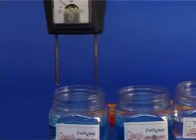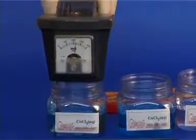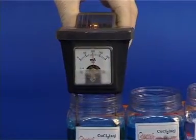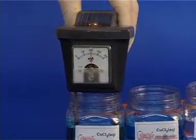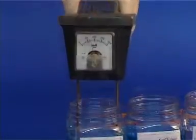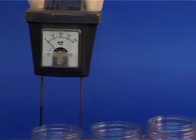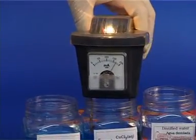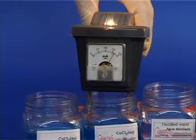In the low-concentration copper chloride solution, the bulb lights up but at a very weak intensity and the ammeter reading is approximately 100 mA. In the concentrated copper chloride solution, the light intensity is considerably higher and the reading is above 160 mA.